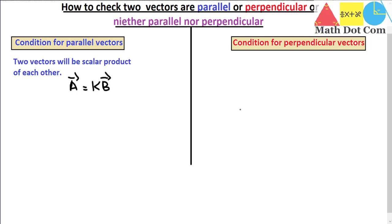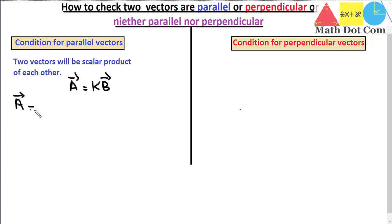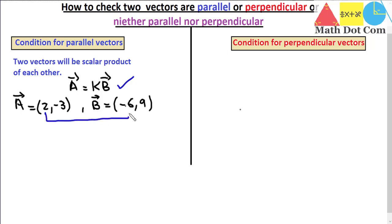Let's have an example. One vector a equals (2, -3) and the other vector b equals (-6, 9). You will be asked to find whether the two vectors are parallel or not. To check that condition, we have to compare the components — first the x-components, then the y-components.